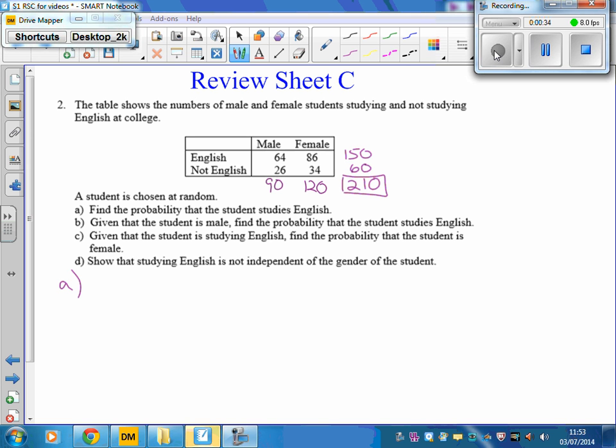So the probability that the student studies English is 150 out of the 210.